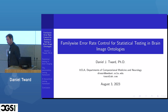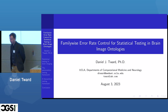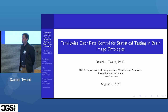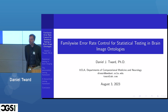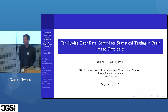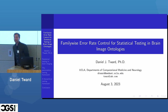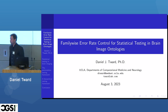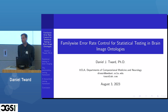My name is Daniel Tward. I'm faculty here in computational medicine and neurology as part of the Brain Mapping Center. Today I want to talk about statistical analysis in my field of neuroimaging. We were asked to present either a tutorial or a research talk, and I decided to do both, about 50-50.